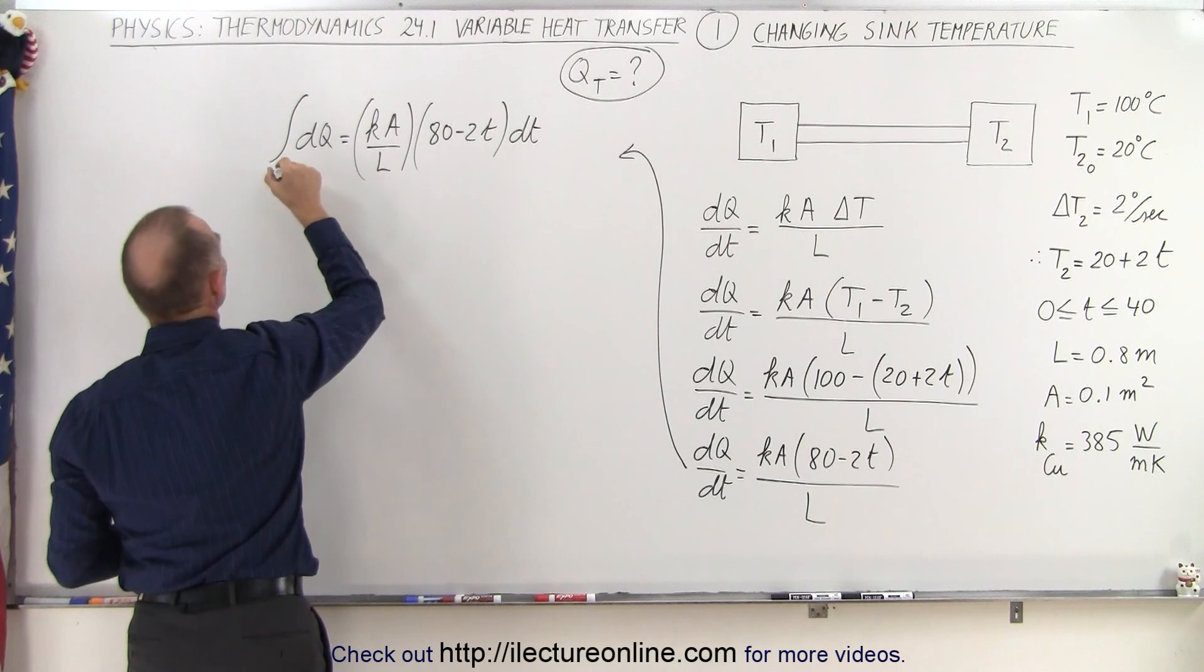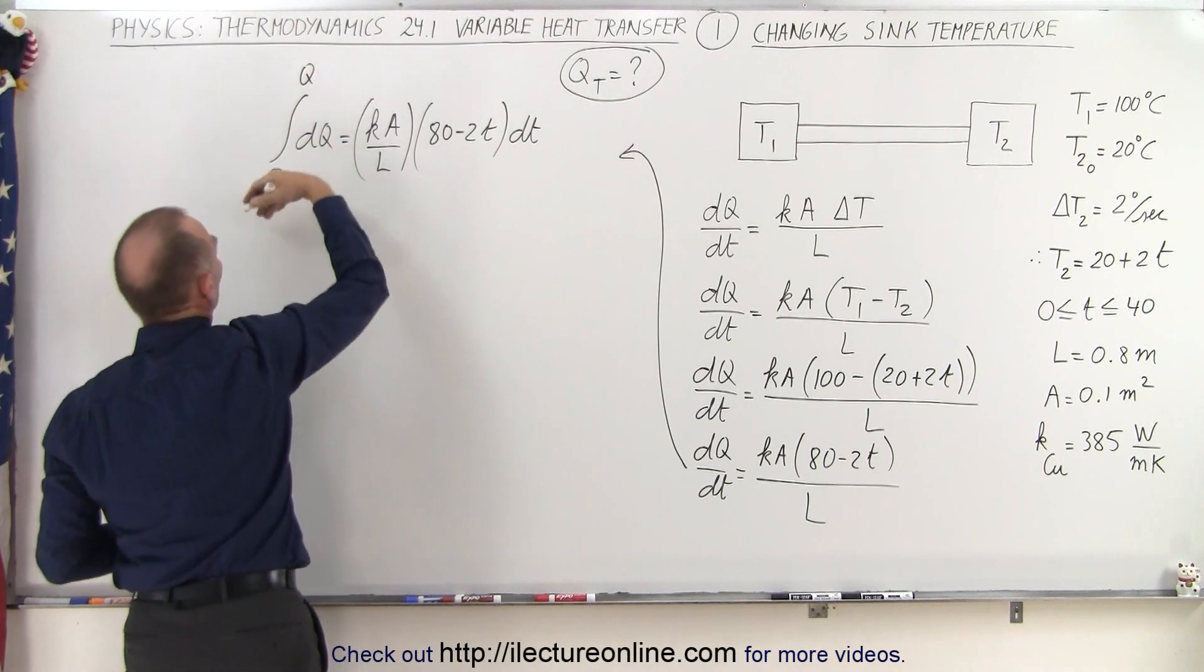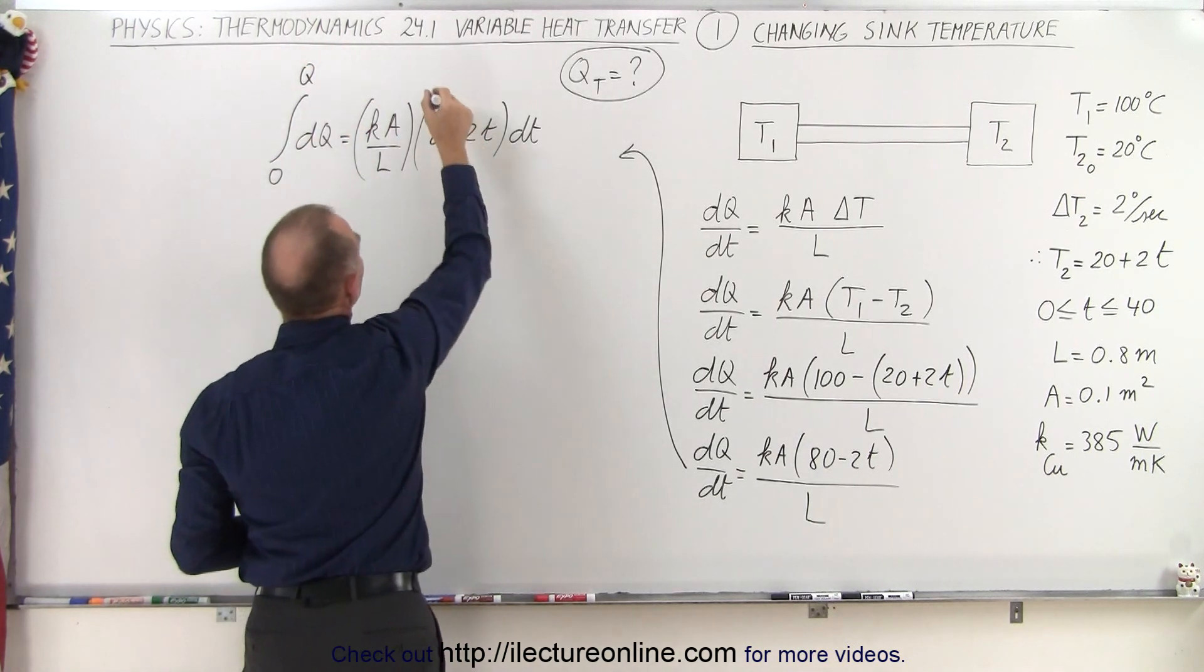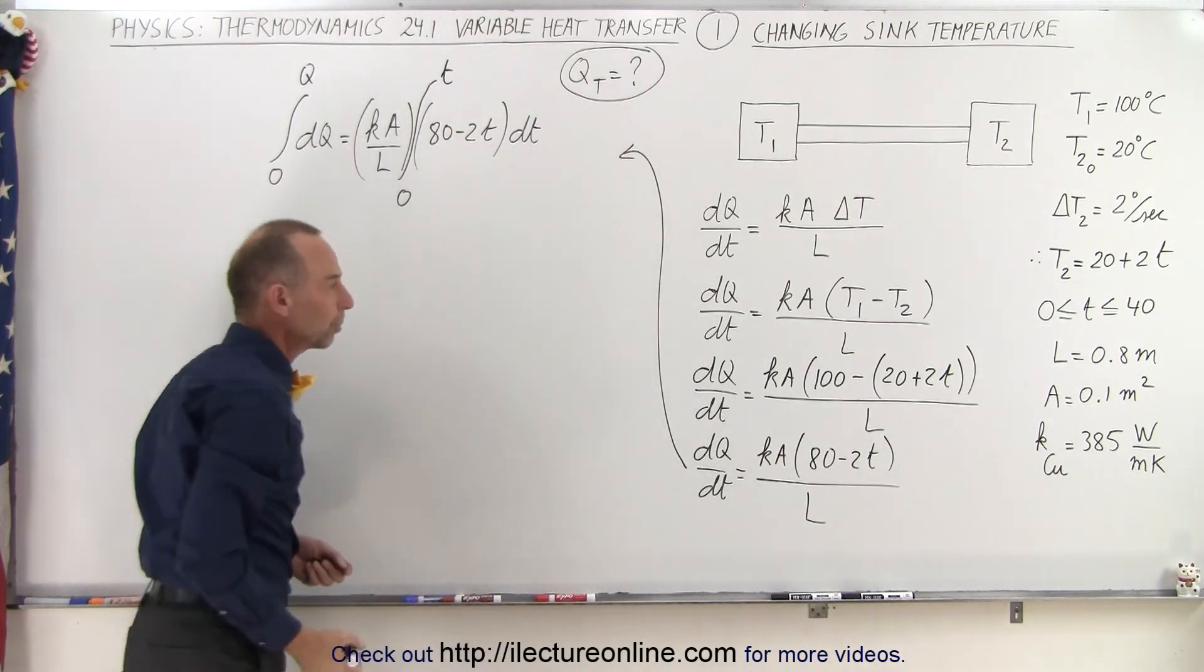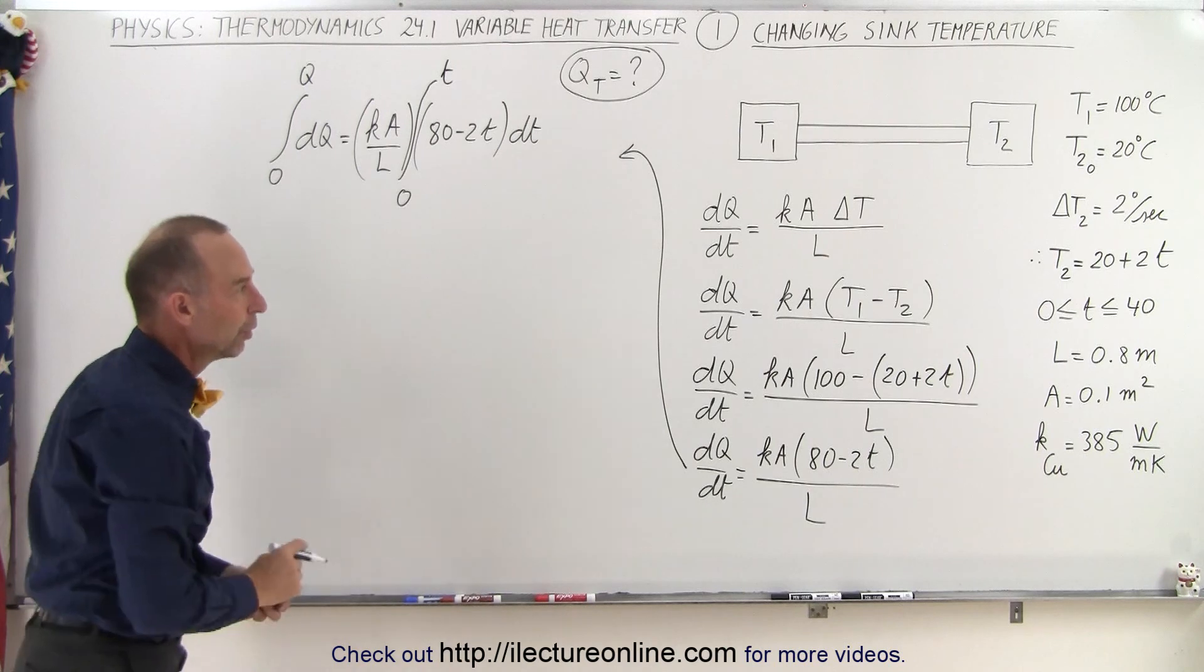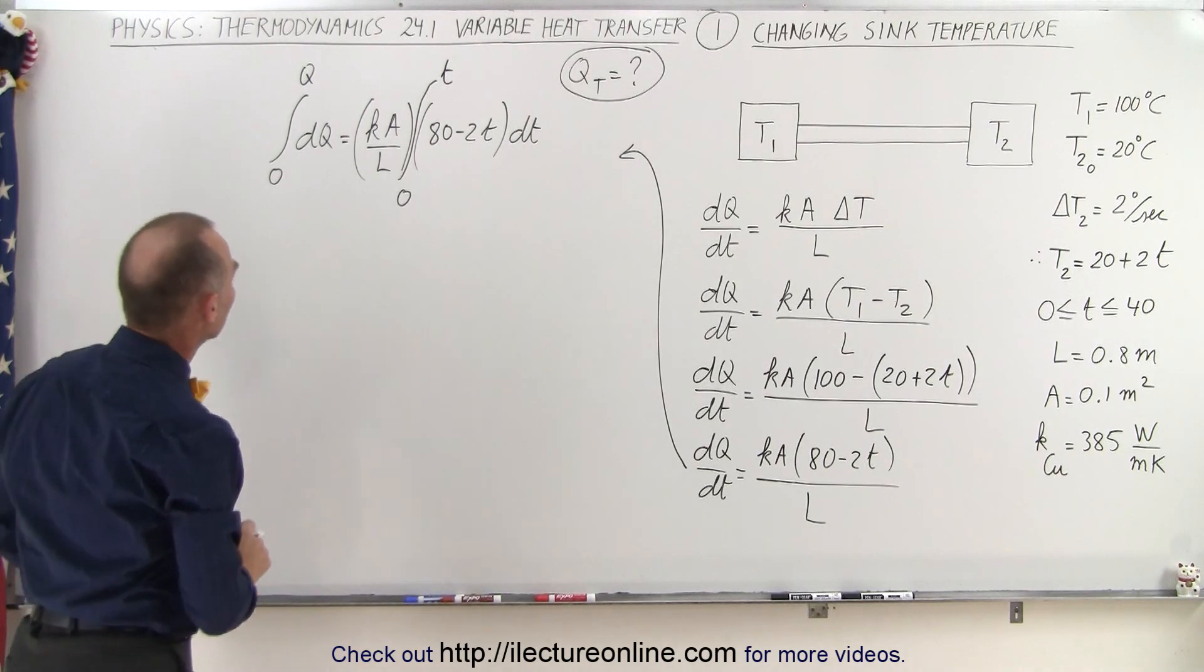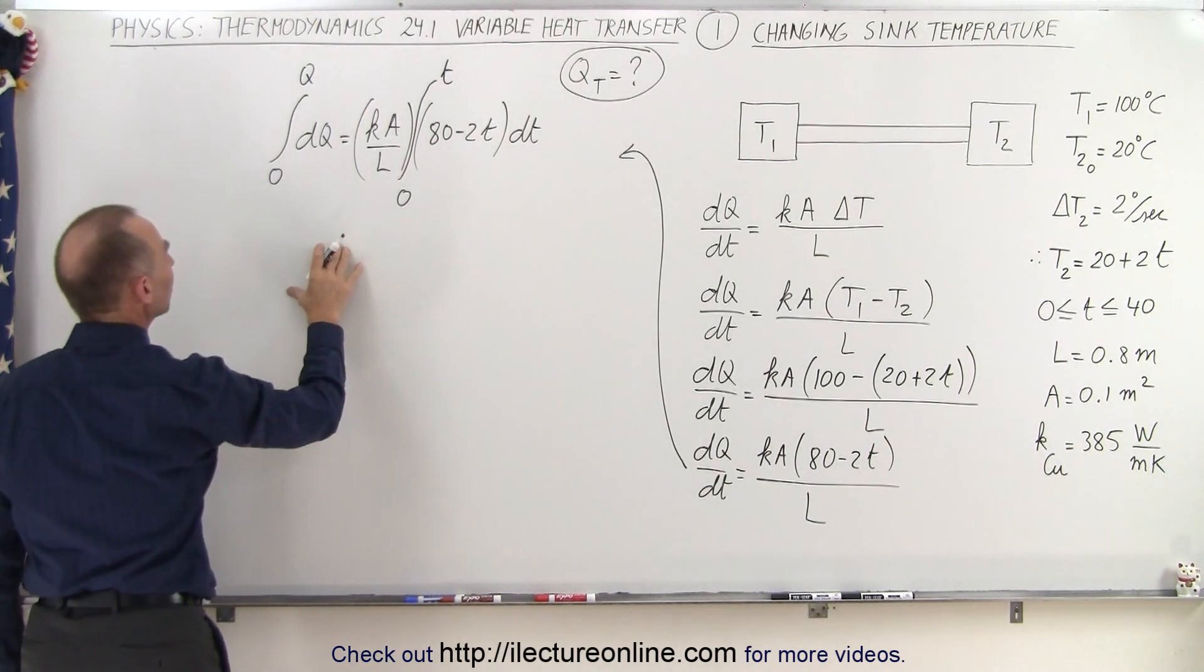And now we're going to integrate both sides. We're going to integrate the left side, so that would be from zero to Q, the total heat being transferred. And here when we integrate this, it'll be from zero to t, the total time that takes place. Of course, it's going to be for t being 40 seconds. All right, let's go ahead and do the integrals now.